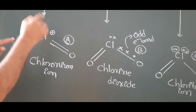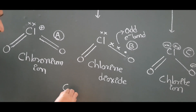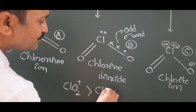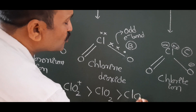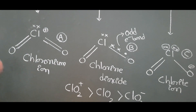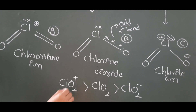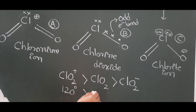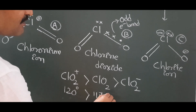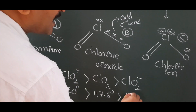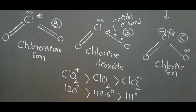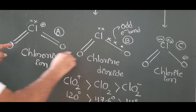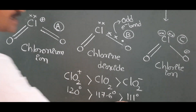The bond angle of ClO₂⁺ is the highest, greater than ClO₂, which is greater than ClO₂⁻, which has the lowest bond angle. The bond angle of ClO₂⁺ is around 120 degrees (not exactly), ClO₂ is 117.6 degrees, and ClO₂⁻ is around 111 degrees. All molecules have the same shape and the same surrounding atoms, so why is there a variation?